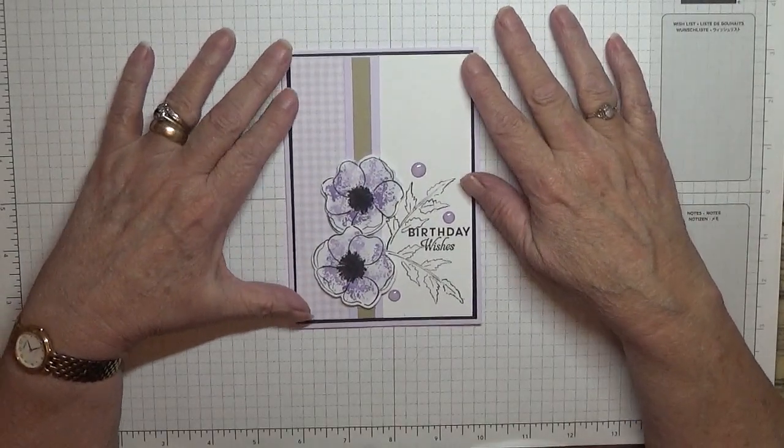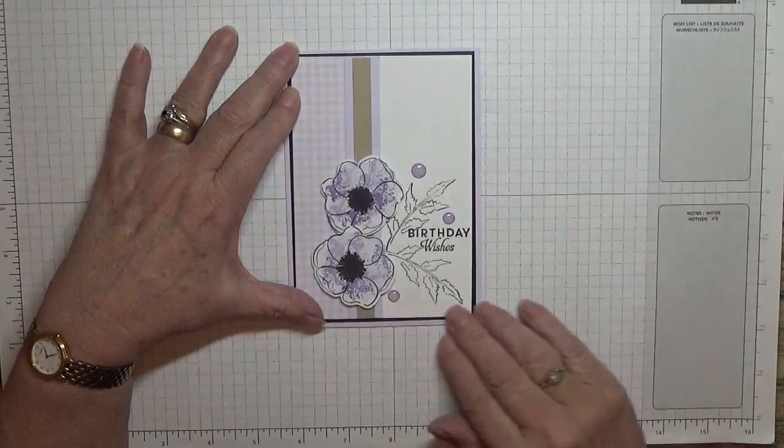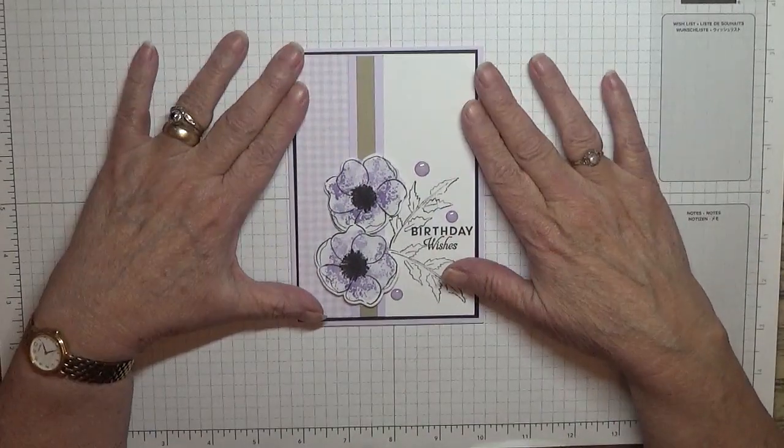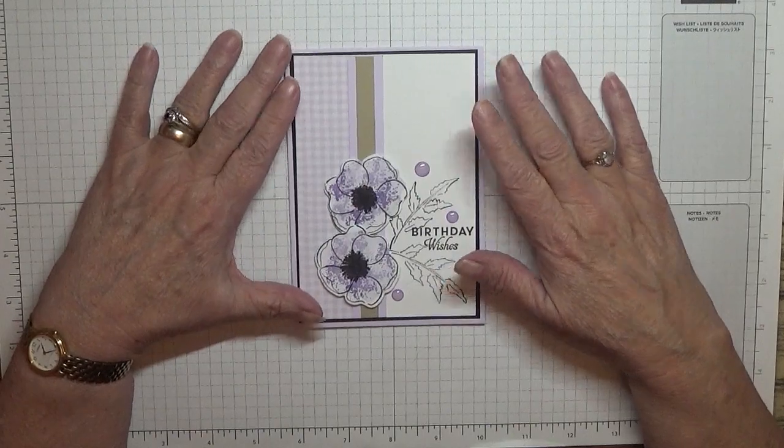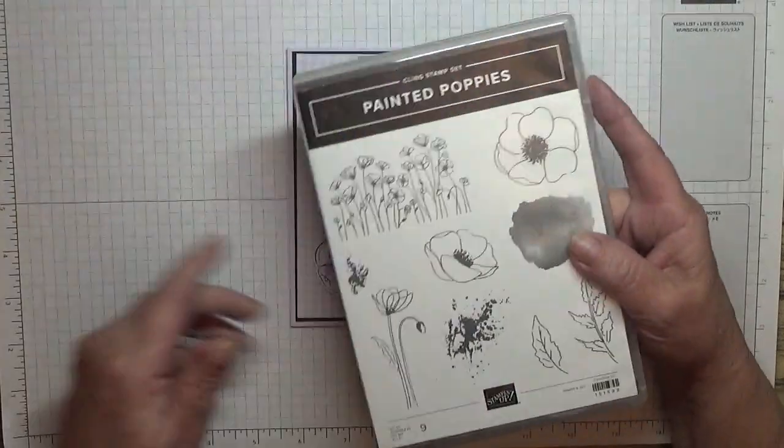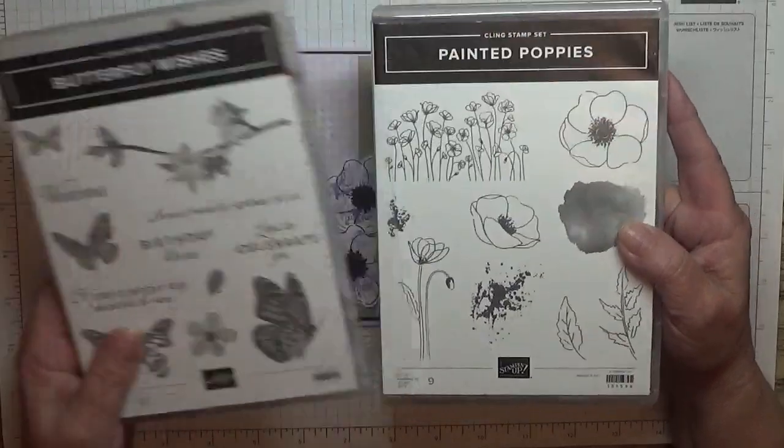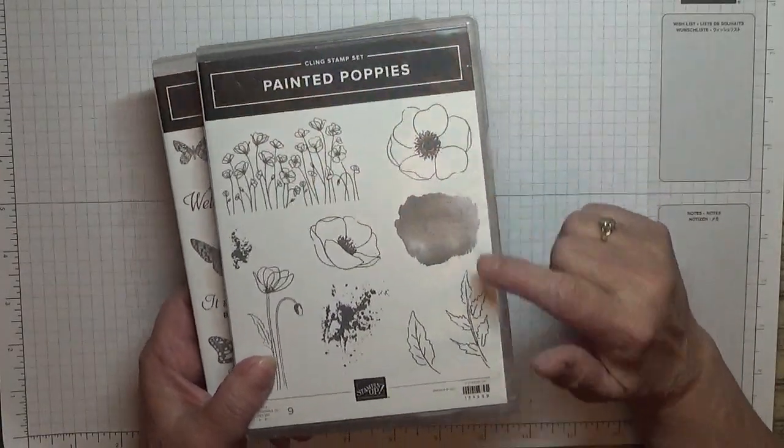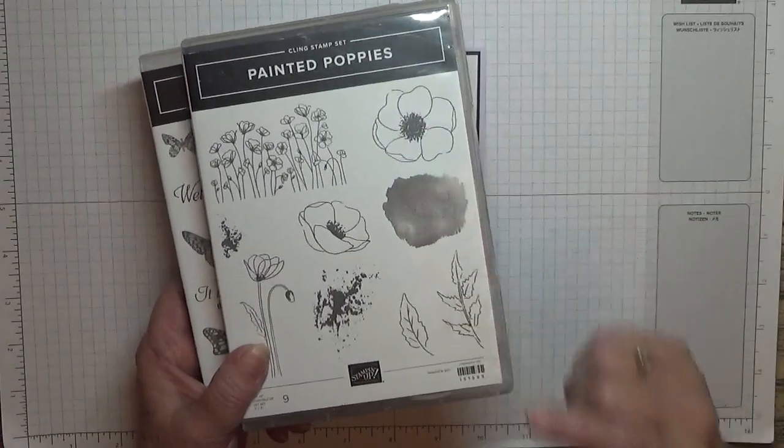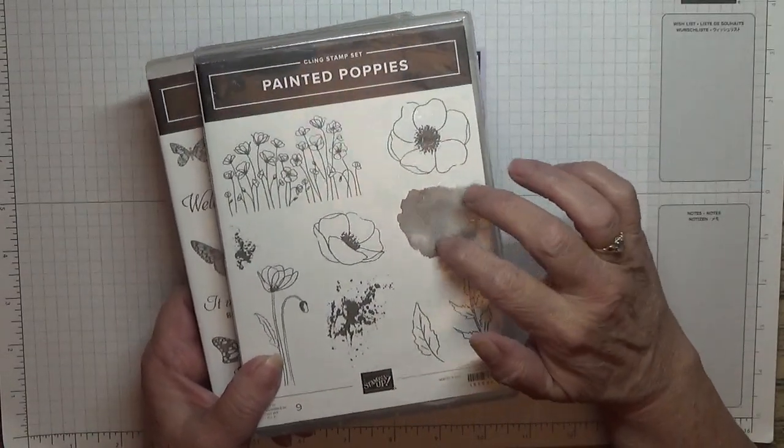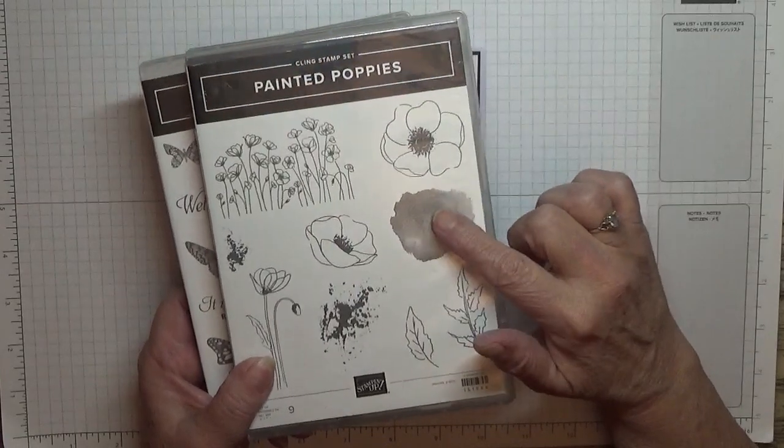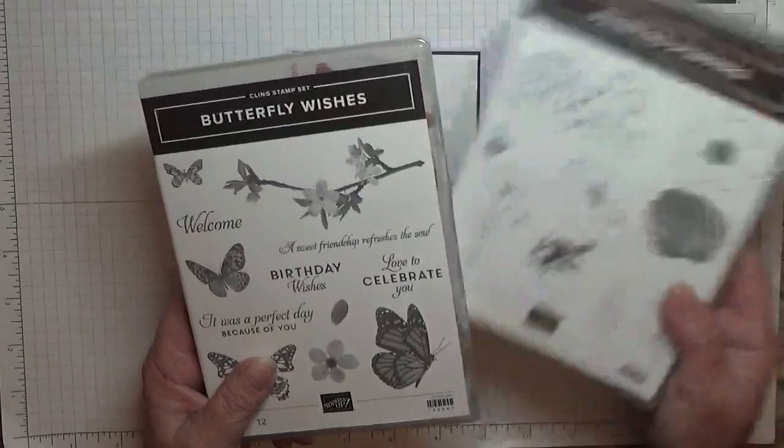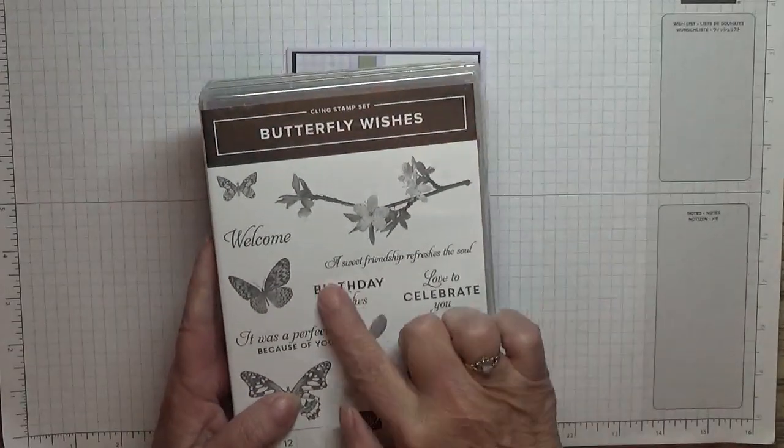Hello, Georgie Burns here. Welcome back to my card making. Today I'd like to show you how I made this card. I am using Painted Poppies, and I'm just going to be using the large flower, the multi-leaf, the filler, and the little splatter dots. I'm also using Butterfly Wishes just because I want the birthday wishes sentiment.